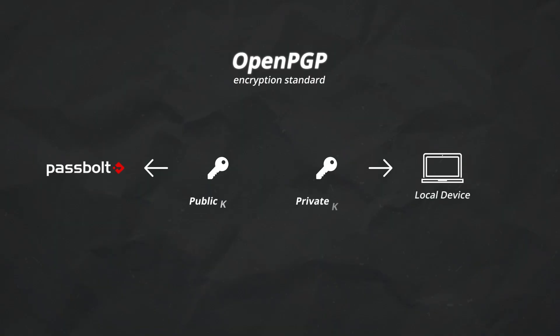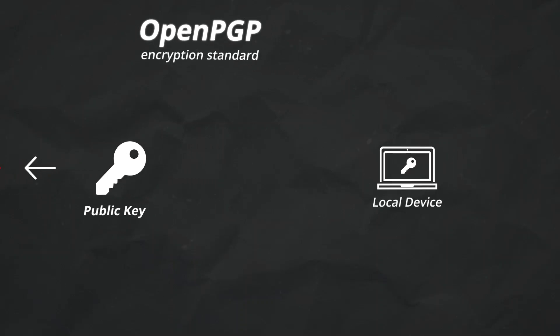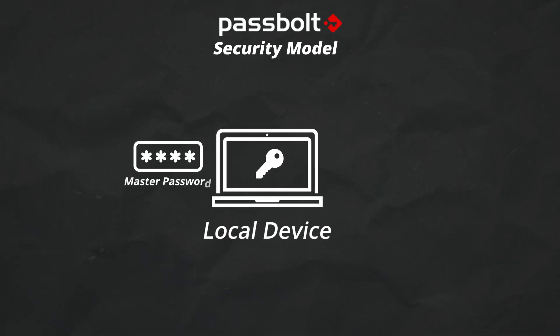Other password managers also use a private-public key pair, but typically the private key is derived from your master password, so it's not completely random. This would allow attackers to unlock your vault using brute force with the master password, especially when it's weak. In Passbolt's model, they use OpenPGP to create a public-private key pair — the public key is sent to the Passbolt server, and the private key never leaves the local device.